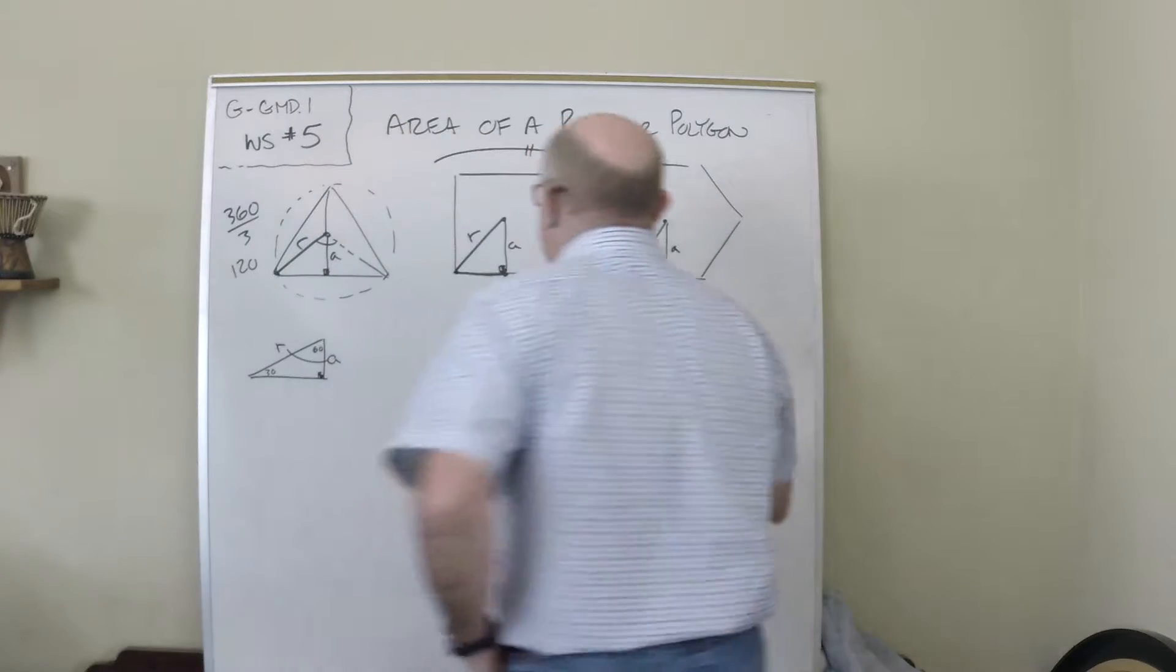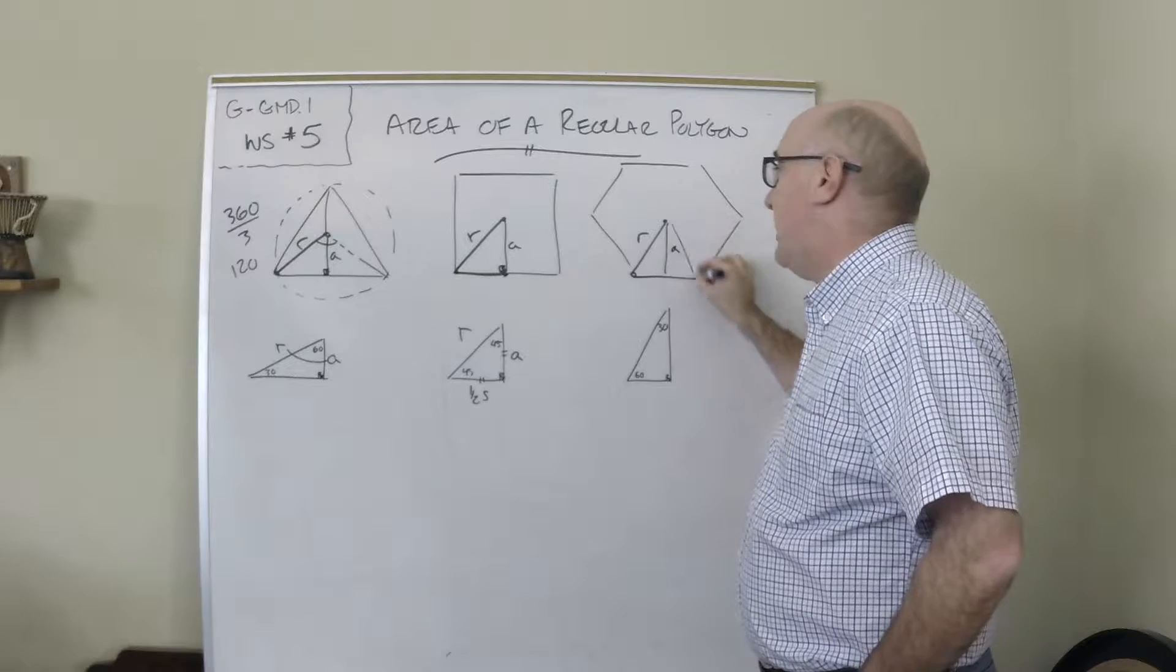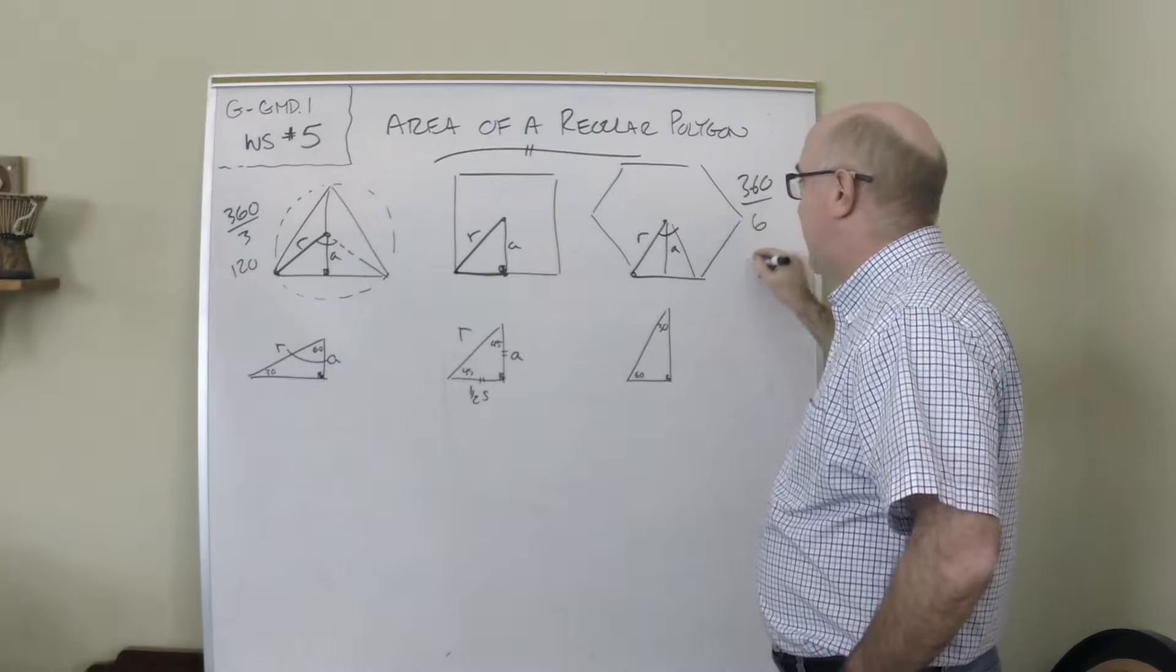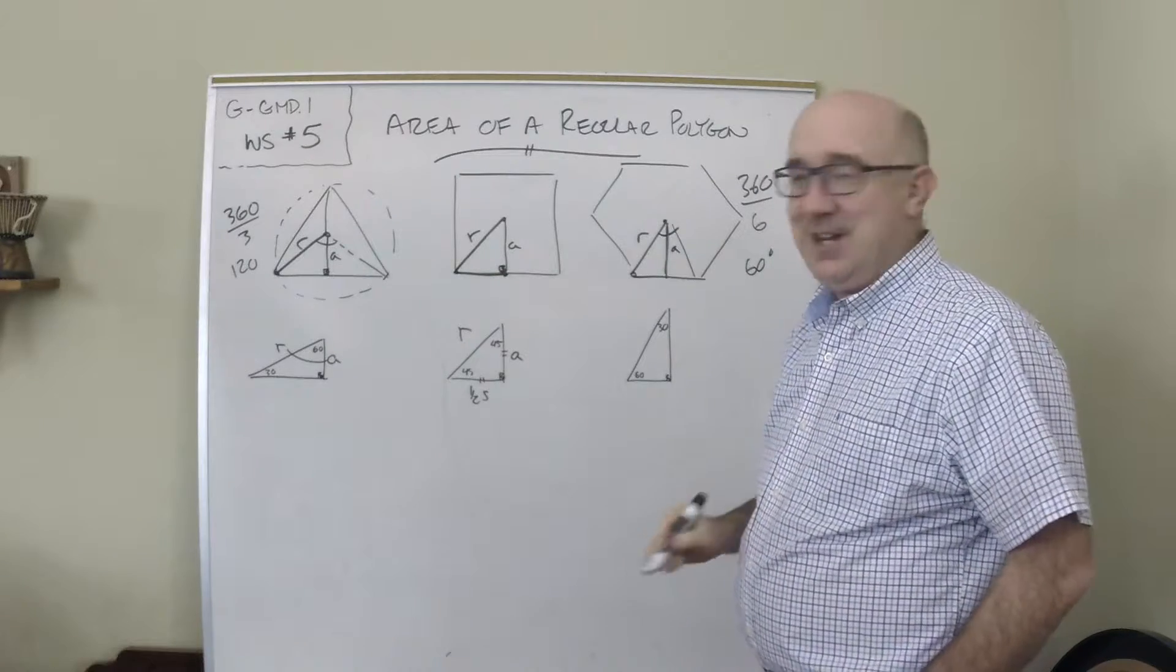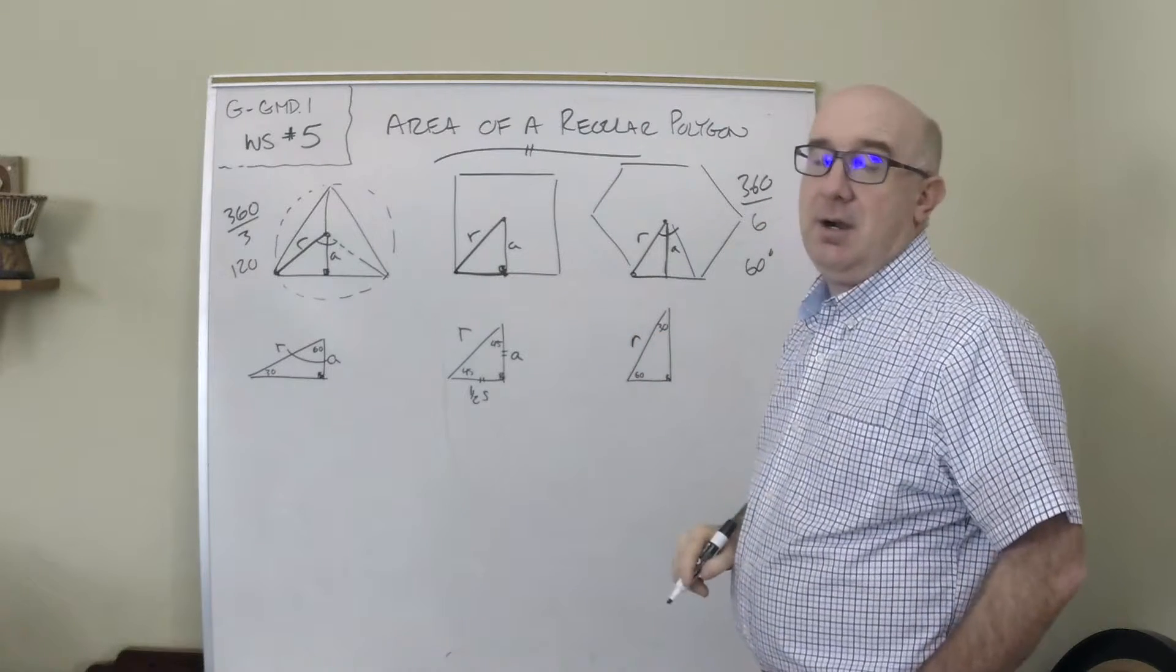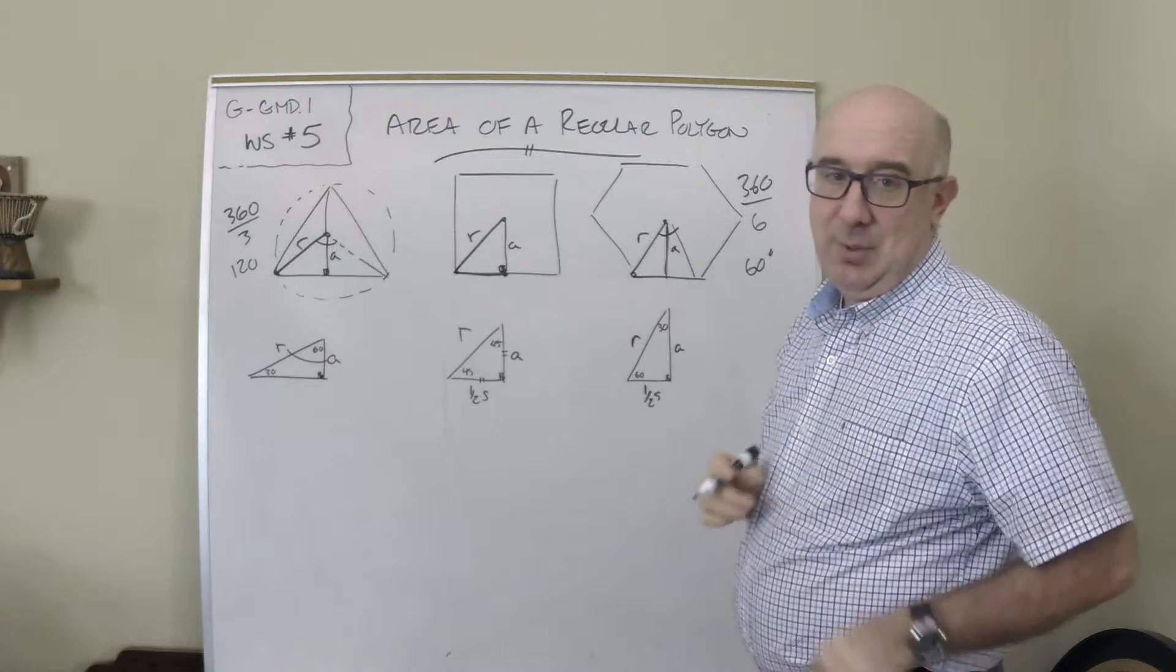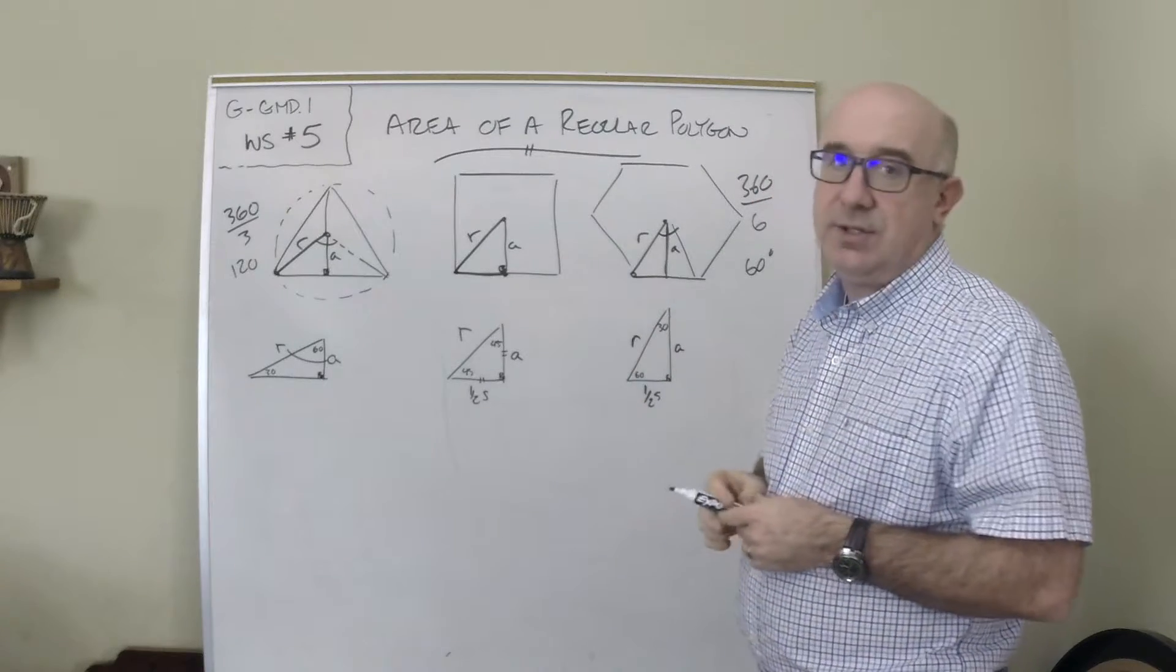Finally, in the hexagon, we get a relationship where the central angle happens to be 60 degrees, because 360 divided by 6 is 60 degrees. When we drop the apothem there, we form a triangle that has a 30 degree angle. The radius is our hypotenuse, this is our short leg, and our long leg is the apothem.